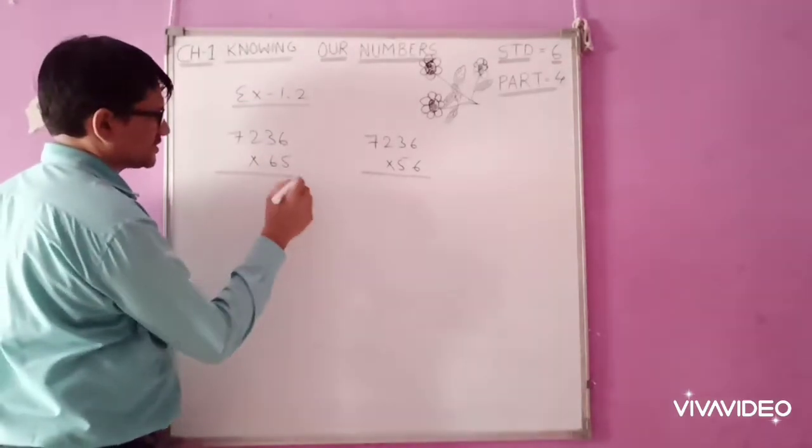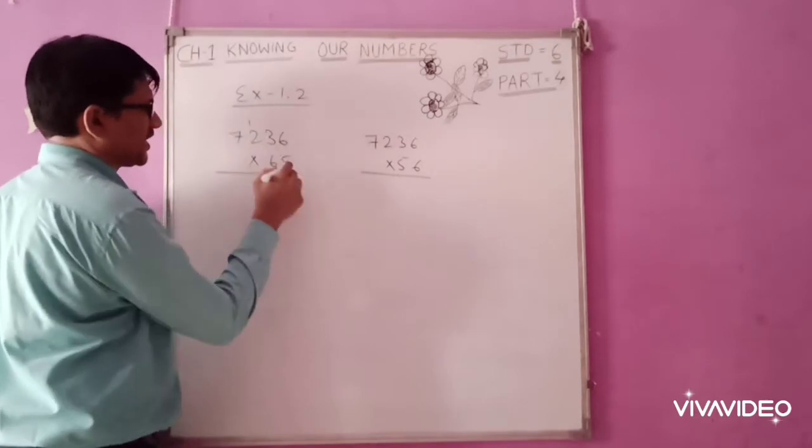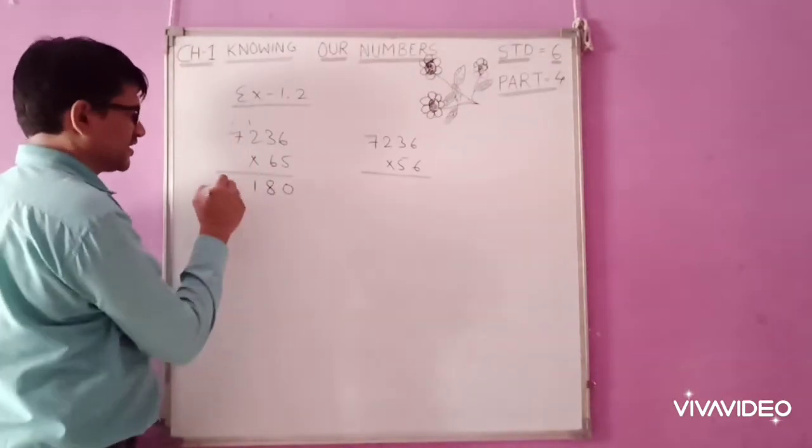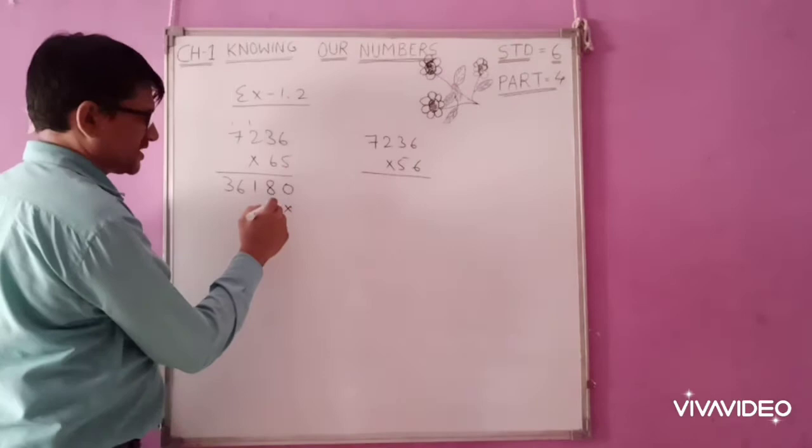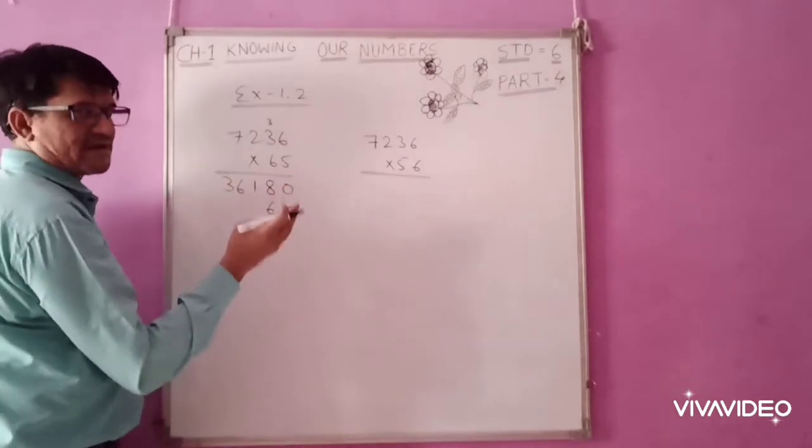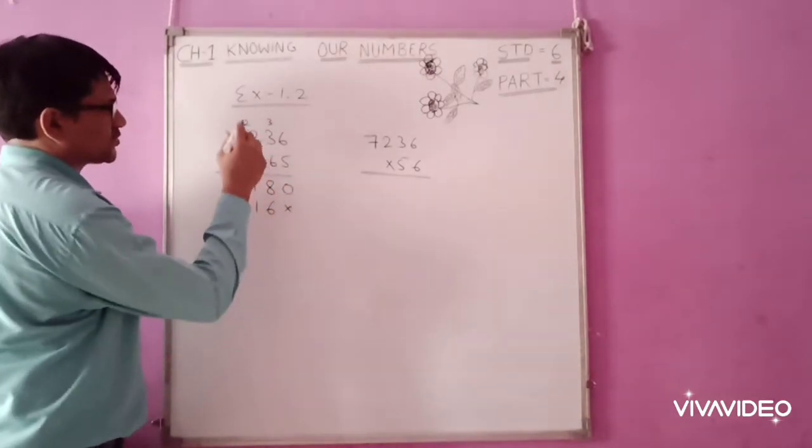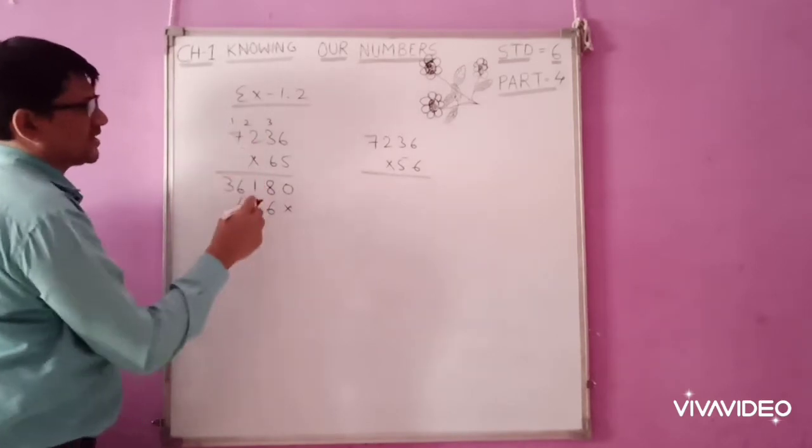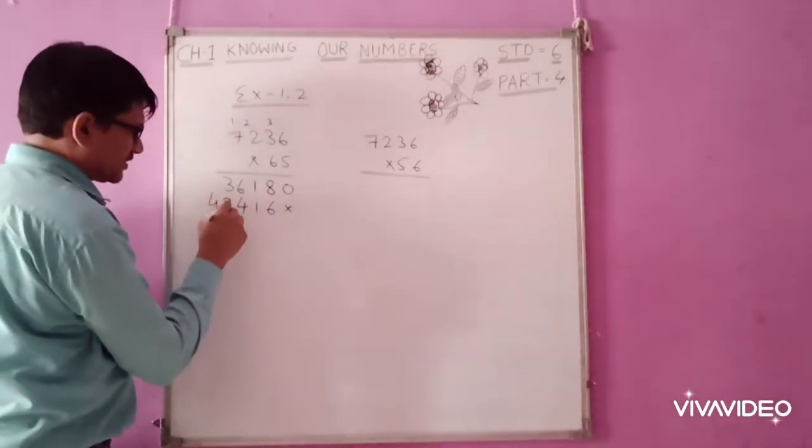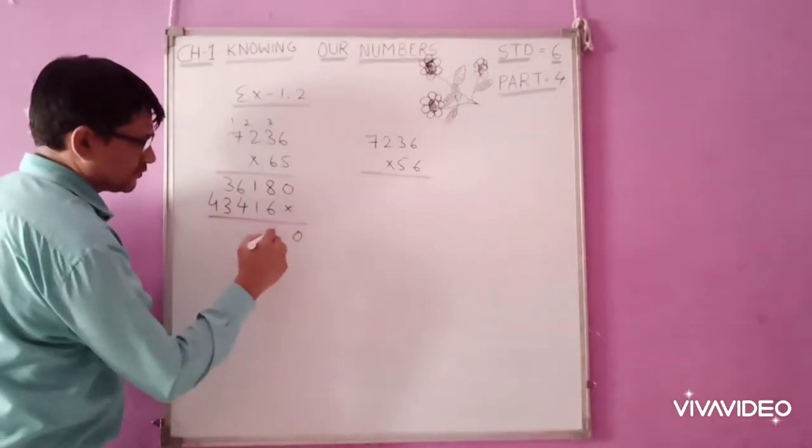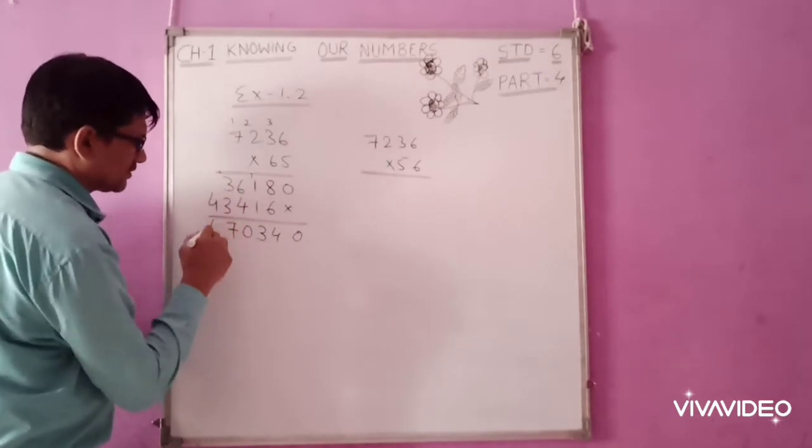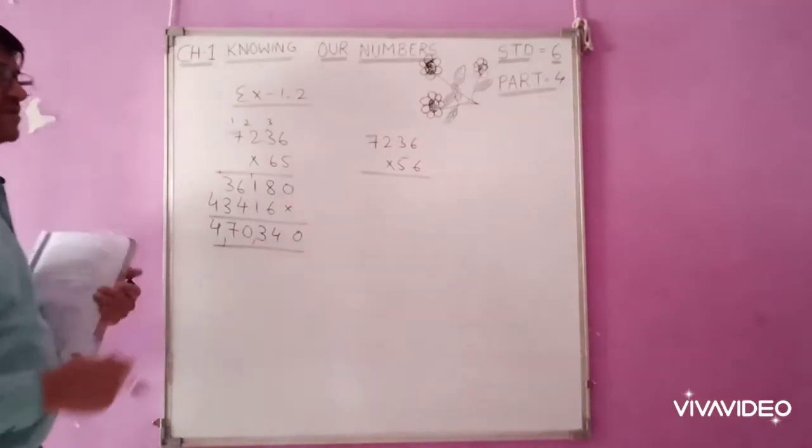5×6 are 30. 0, 3 carry. 5×3 are 15, 18, 1 carry. 5×2 are 10, 11, 1. 1 carry. 5×7 are 35, 36. 6×6 are 36. 6, 3 carry. 6×3 is 18, 19, 20, 21. 1, 2 carry. 6×2 is 12, 13, 4. 1, 6. 6×7 are 42, 43. Now, add 0, 4, 1, 3, 0, 1, 6. So the total answer is 4,05,216.